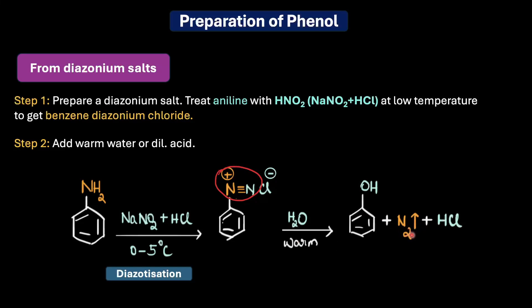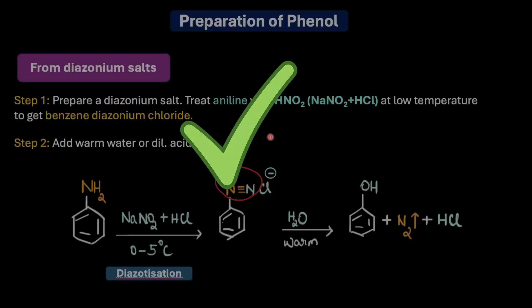This works so well because nitrogen gas (N₂) is one of the most stable molecules — once it leaves, there is no going back, making the reaction practically irreversible. From a mechanistic view: when super-stable nitrogen gas leaves, it creates a temporary positively charged aryl carbocation, which immediately grabs any available nucleophile in the medium. With plenty of water present, it grabs OH⁻ giving us phenol. Diazonium salt is also a great way of making all kinds of aromatic compounds — chlorobenzene, bromobenzene, iodobenzene, and even the difficult fluorobenzene — so it is excellent for lab-scale synthesis with great control and purity.